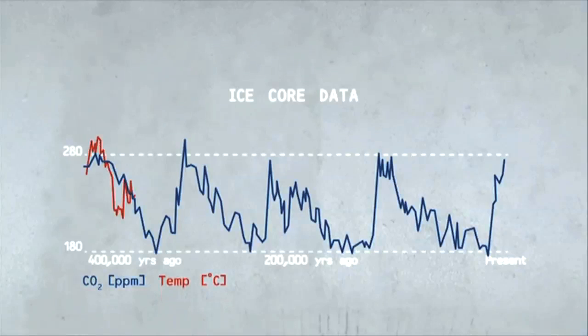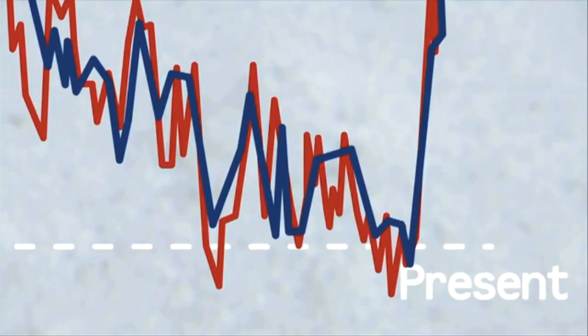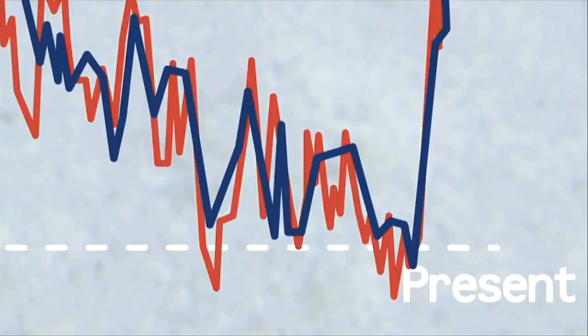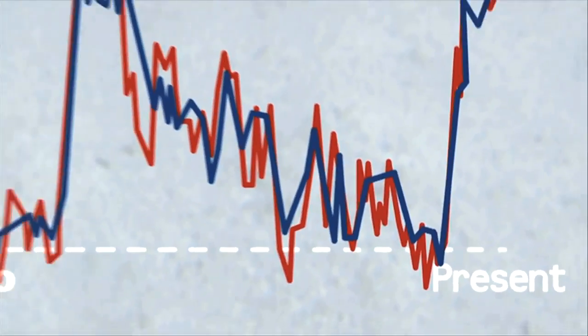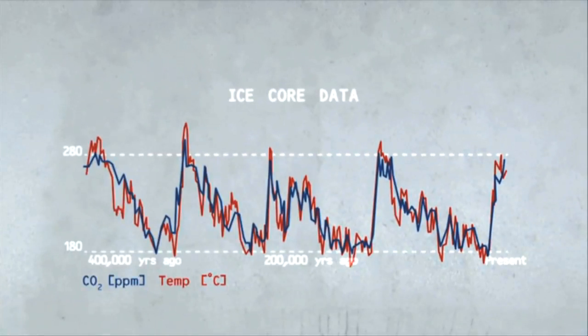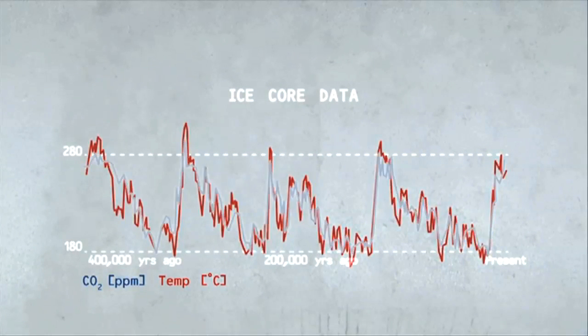Now, put the two lines together, and you can see how closely temperature and carbon dioxide track each other. They're not exactly alike. At times, the orbits caused a little temperature change before the feedback effects of CO2 joined in. But just as we saw in New Zealand, we can't explain the large size of the changes in temperature without the effects of CO2.